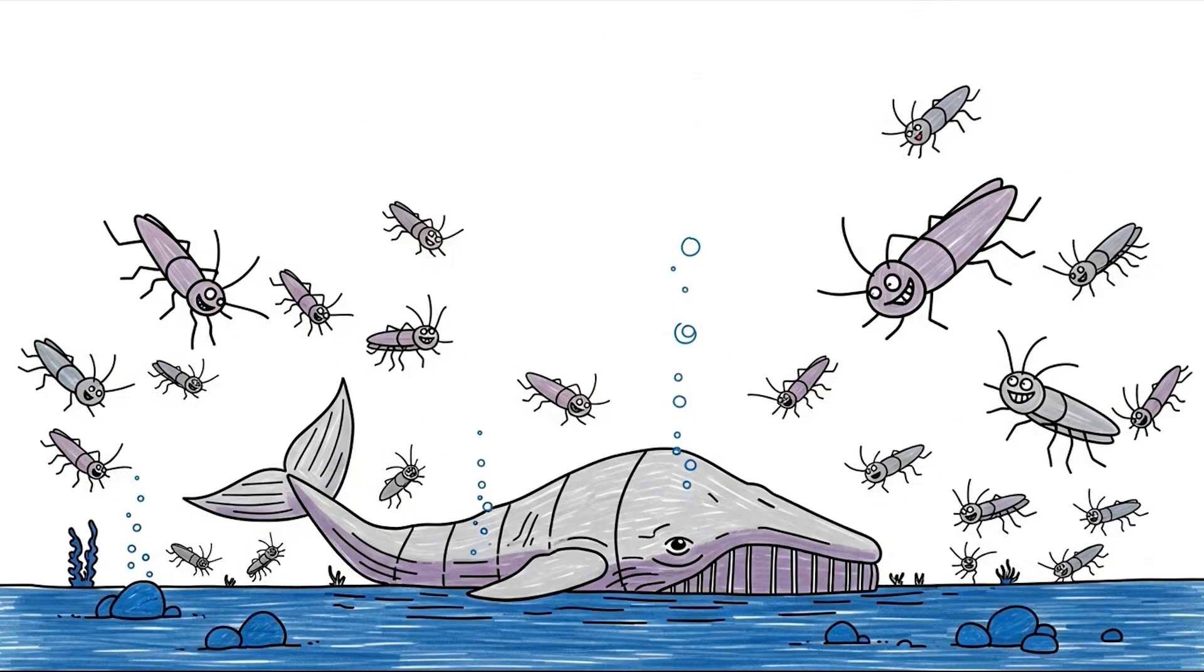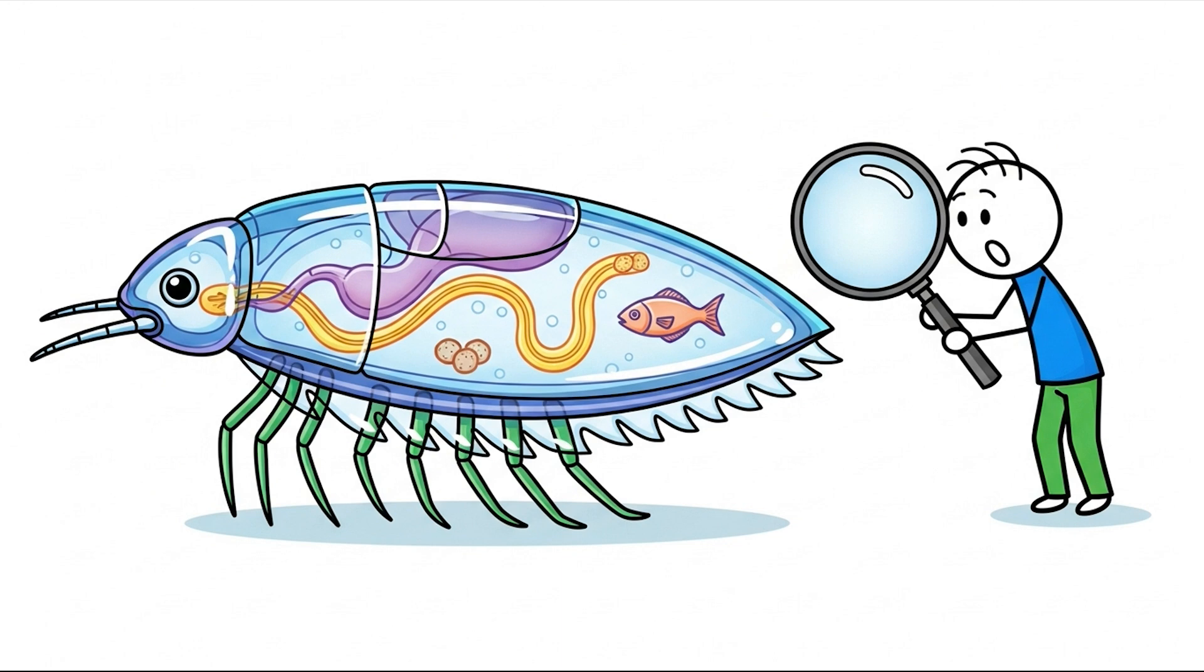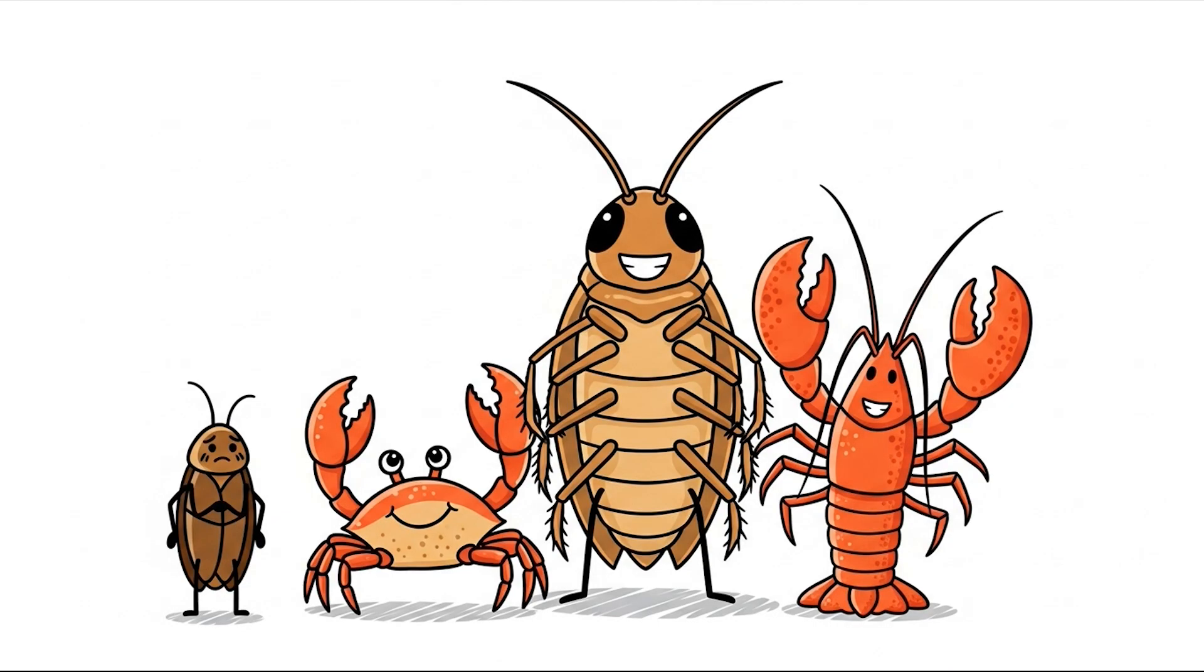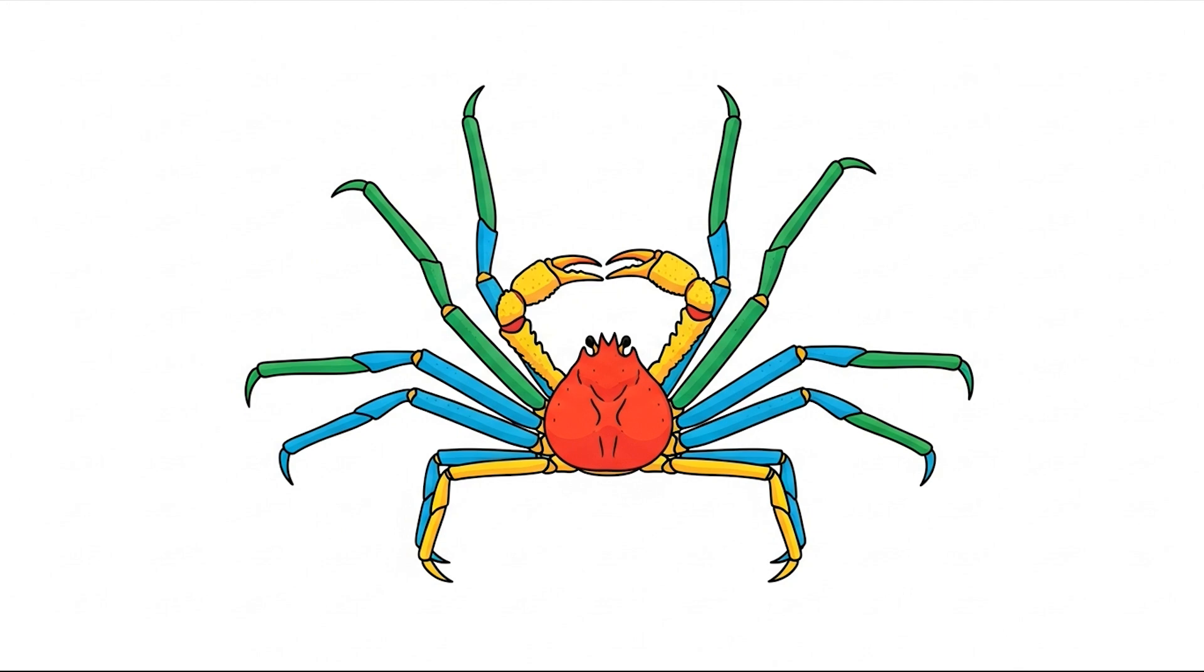When food finally does show up, like a whale carcass sinking to the ocean floor, they swarm it, feasting so voraciously that their bodies can become completely transparent. You can literally watch their last meal moving through their digestive system. They'll eat so much that they become engorged and can't move for months. Despite their name and appearance, they're not actually related to regular roaches. They're closer kin to crabs and lobsters. It's almost as if nature took a common roach, pumped it full of steroids, planted in armor, and then dropped it into the deepest, most extreme parts of the ocean.